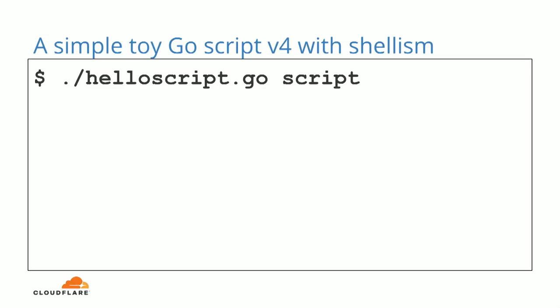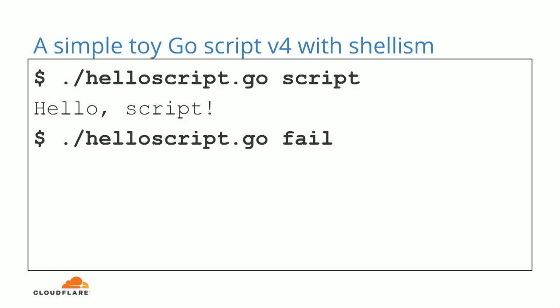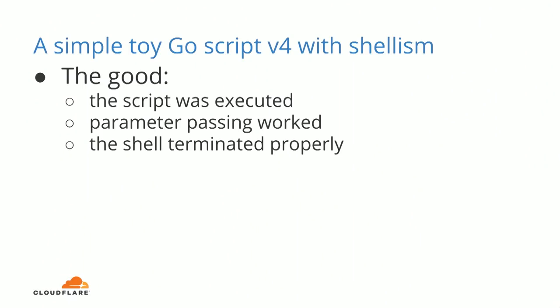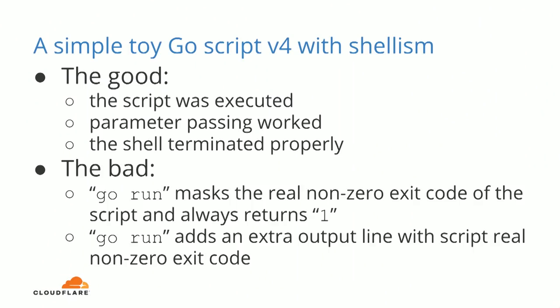What happened is the script was executed and parameter passing worked, but the bad thing is you also get some garbage appended at the end, because the shell executed the first shellism line and then tried to execute the source file line by line itself. Stack Overflow people don't give up — we can terminate the shell execution early by adding an exit to the shellism line. Parameter passing works. But in the failure case, you also see some weird line appended with an exit status, and when you check the real exit status it's always 1. The Go run tool masks the real non-zero exit status of your script and always returns 1, also appending your real exit status as output to the line.